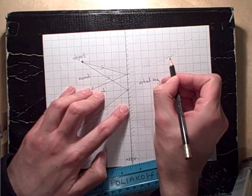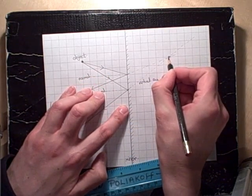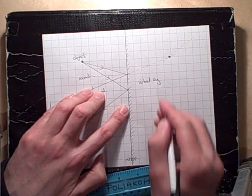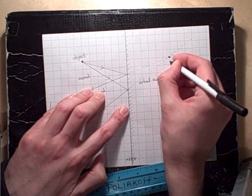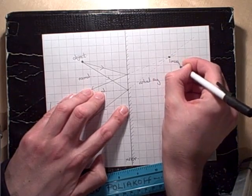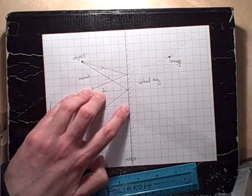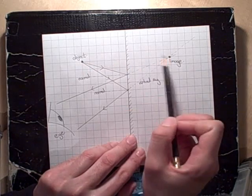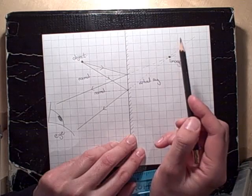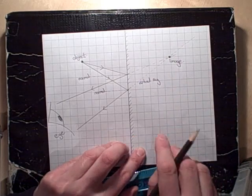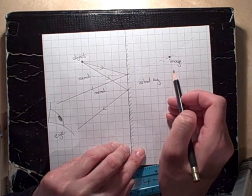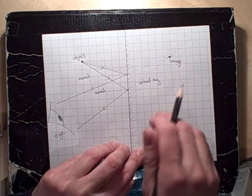The point where these virtual rays cross is where the image is formed. And I can put a little spot there and label that image. And this helps us to understand why the image is formed behind the mirror, from the opposite side to the object. And we can tell it's a virtual image, because it's where the virtual rays cross.